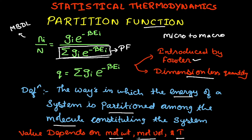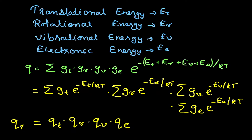The partition function depends on the molecular weight of the system, molar volume of the system, as well as the temperature of the system. Qualitatively speaking, the partition function indicates how particles are distributed amongst various energy levels and gives us a measure of how many energy levels are available.